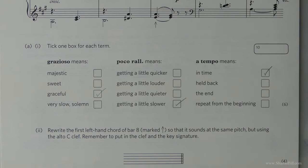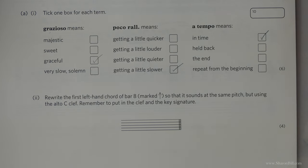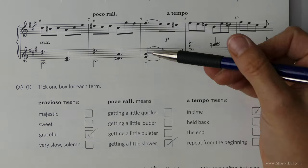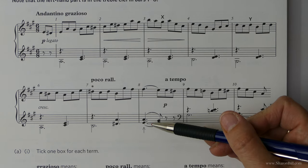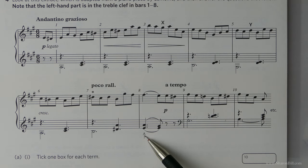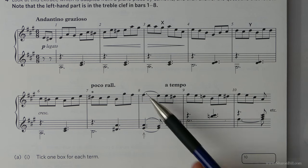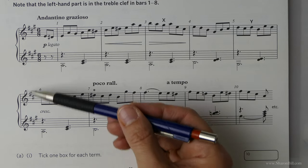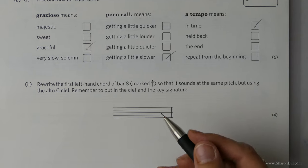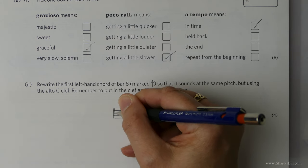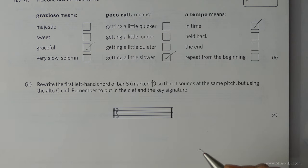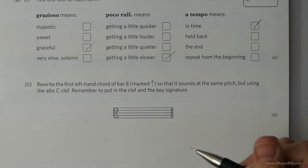So then here we go on to the next question. We're asked to rewrite the first left hand chord of bar 8, marked with a little arrow. Now watch out here — they've even told us very helpfully in bold that the left hand is in the treble clef to begin with. It switches to bass clef here, so just watch your clef. We need to keep it at the same pitch but change from treble clef to alto clef. Alto clef is centred on the middle line — that's your middle C that everything works from.